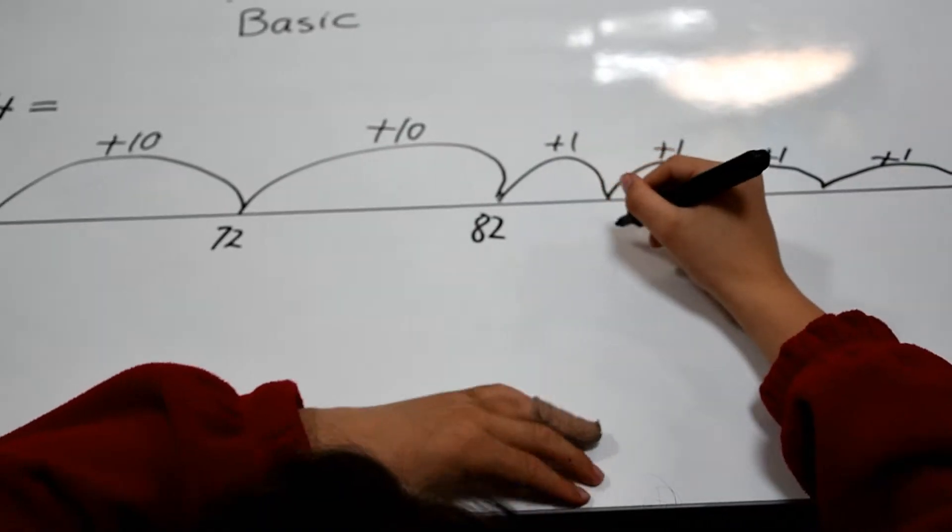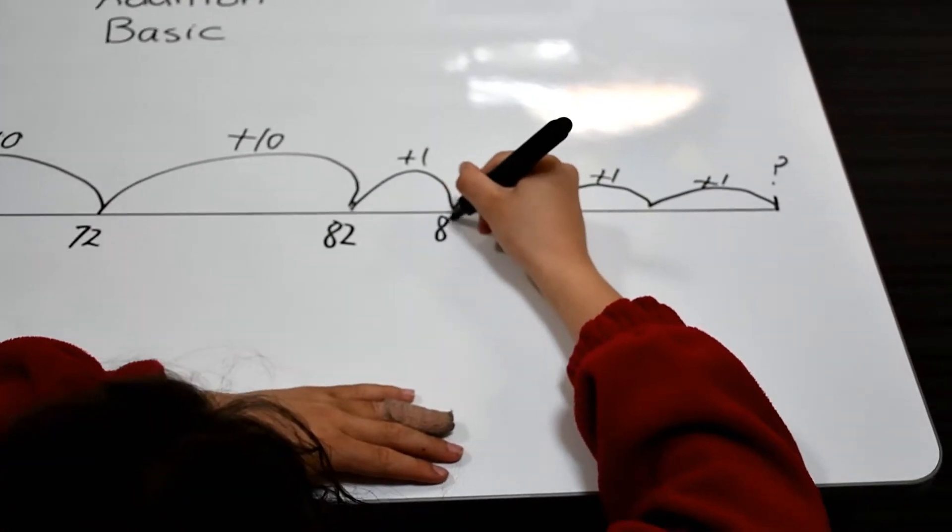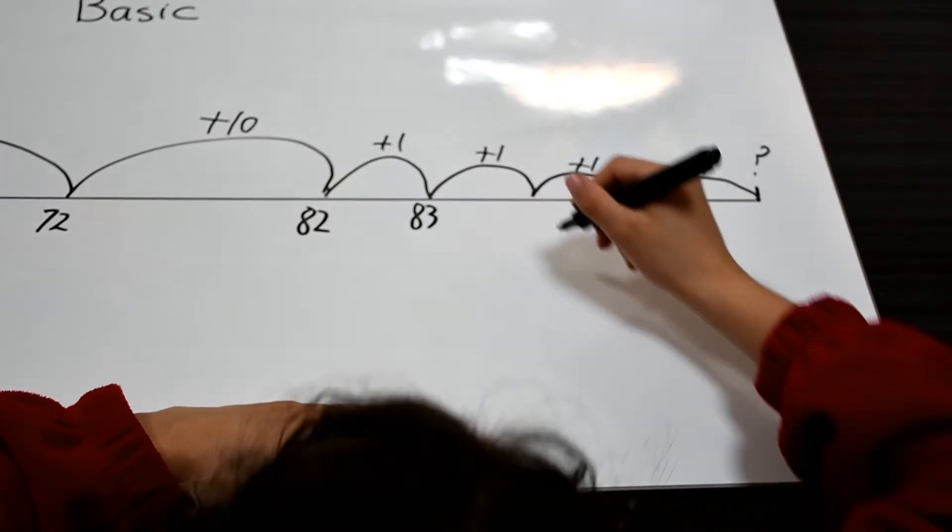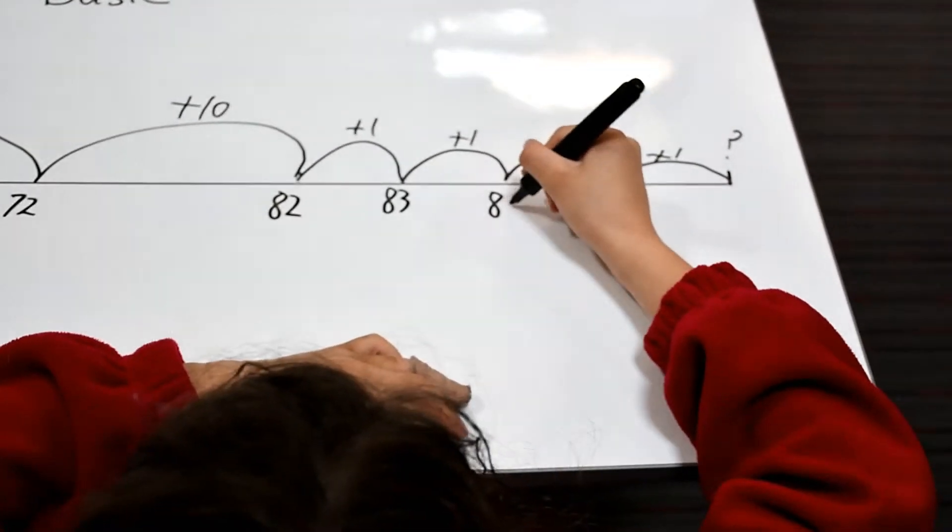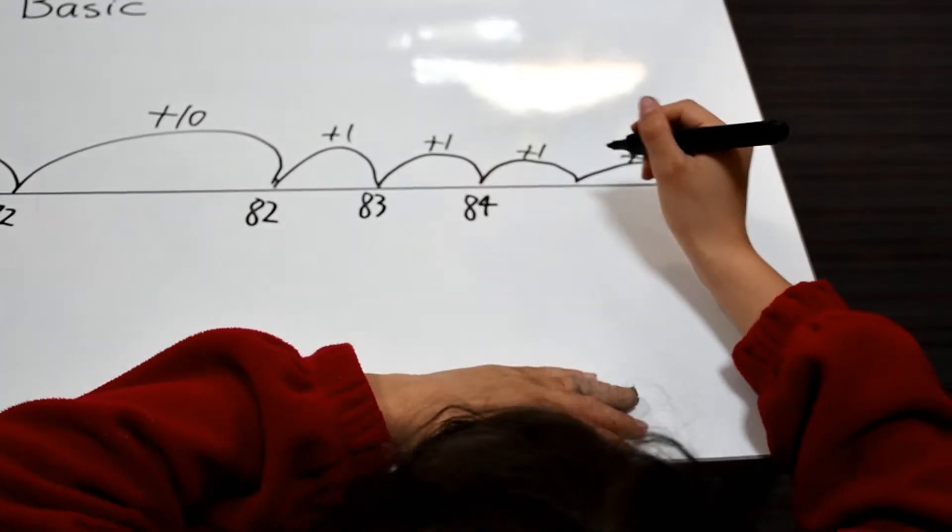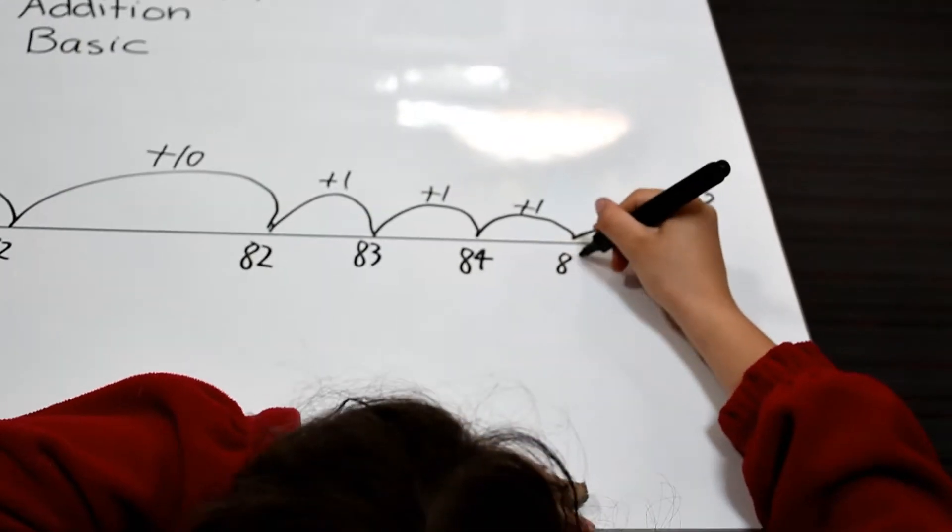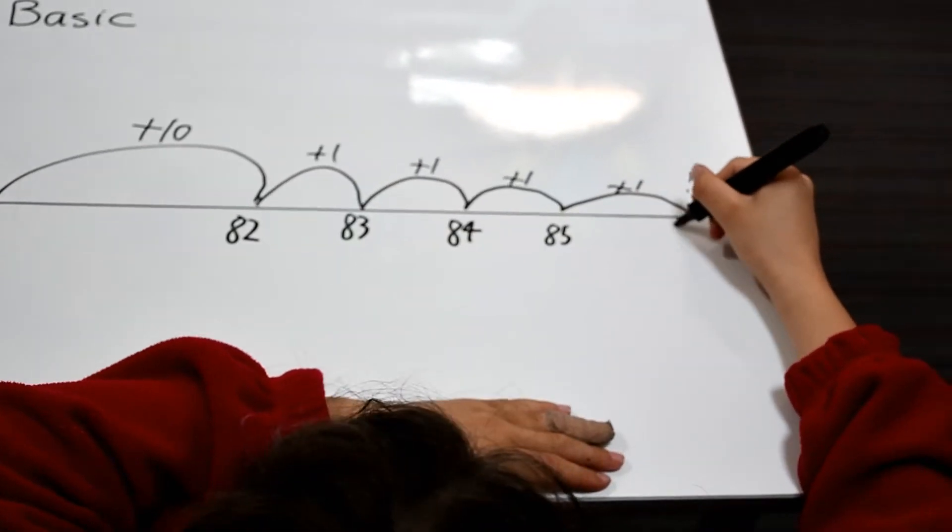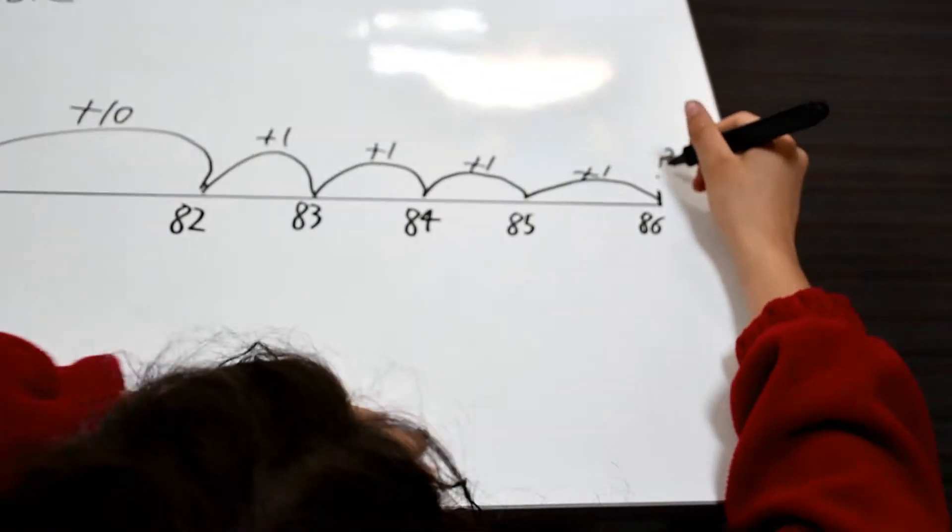Now we add the ones. 82 plus 1 is 83, 83 plus 1 is 84, 84 plus 1 is 85, and finally 85 plus 1 is 86. That's our answer.